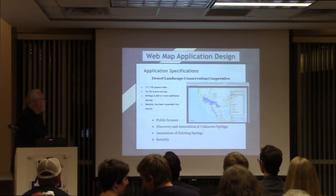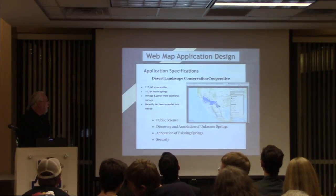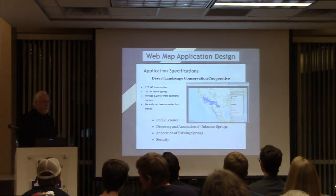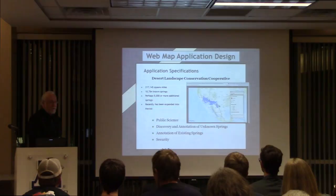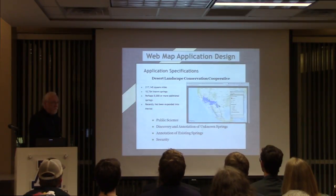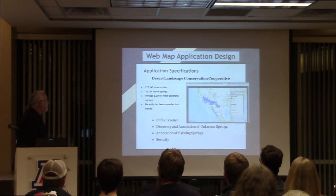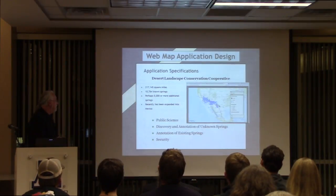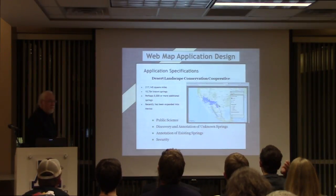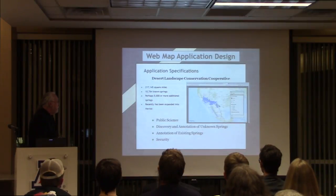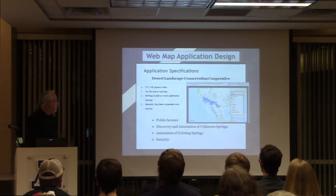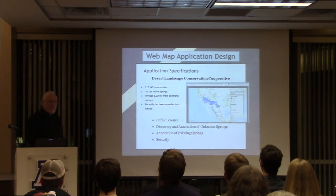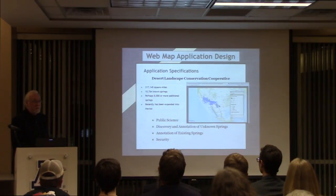The data I'm using is the Desert Landscape Conservation Cooperative, and the layer is on the Springs Institute GeoServer. It encompasses 217,000 square miles and almost 11,000 known springs. There are perhaps 5,000 or more additional springs that aren't mapped. It's recently being expanded into Mexico, though they haven't released the data yet.